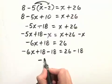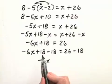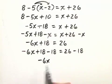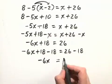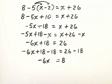On the left hand side, we're just left with negative 6x, because the 18 and minus 18 add to 0, equals, on the right hand side, 26 minus 18 is 8.